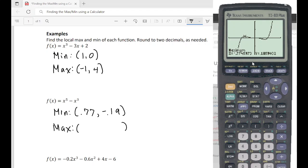So max is going to be negative point seventy seven and positive point nineteen. And that is the maximum for this function.